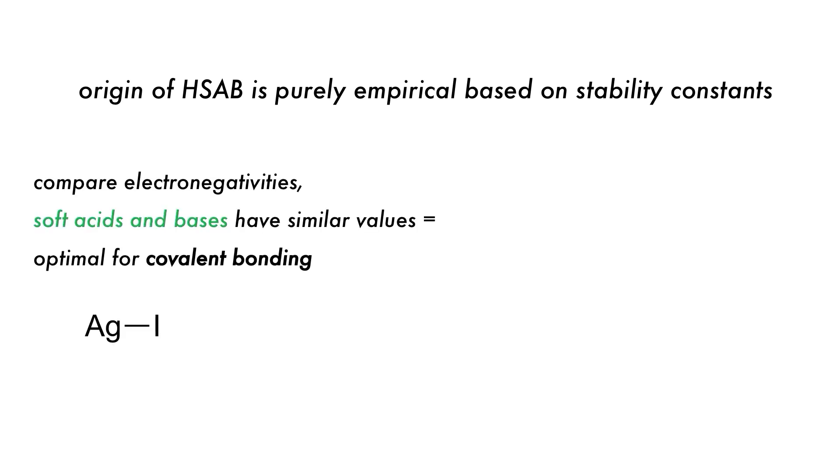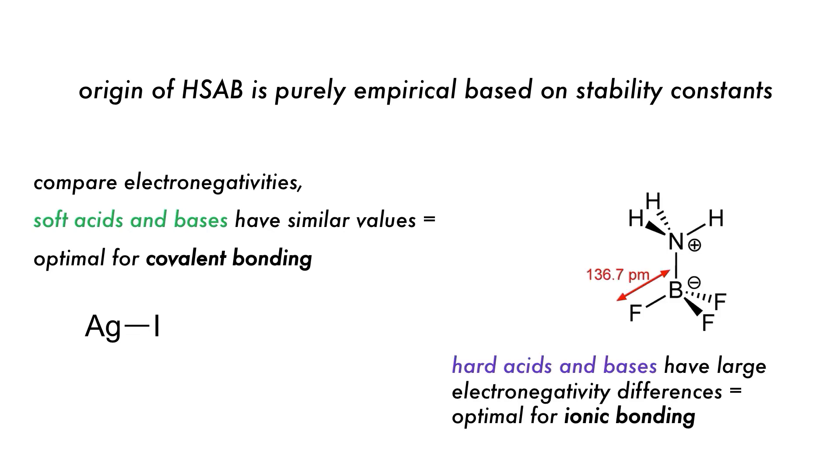The origin of hard-soft acid-base theory was purely empirical, based on observations of stability constants. It can, however, be explained if we consider electronegativities. Soft acids and soft bases have similar values, which makes them optimal for strong covalent bonding. Conversely, hard acids and hard bases have a large difference in their electronegativities that is optimal for ionic bonding.